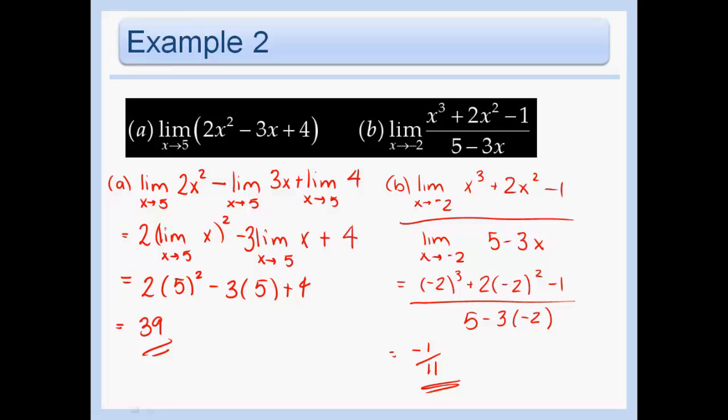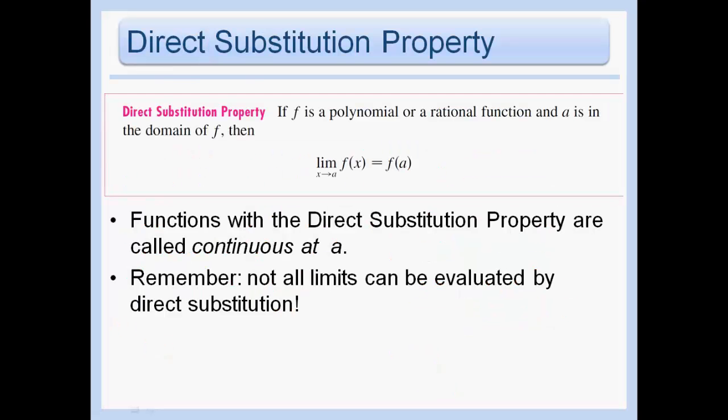What have we learned here? We've probably picked up on the fact that if a function is a polynomial or rational function, and a is in the domain of f, then the limit is just the function evaluated at that point. Basically, if there are no holes in the function — if it looks pretty normal — we can just use direct substitution: plug in the value. Functions with this direct substitution property are called continuous at a, and we'll discuss the definition of continuity as we go on.